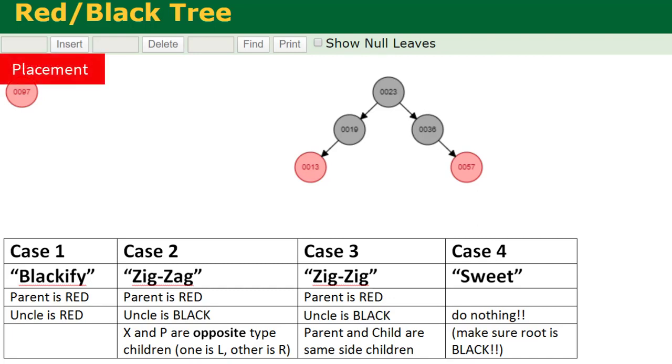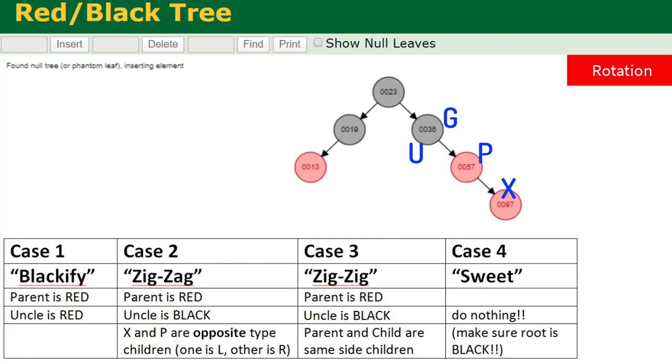Next number is 97. Place it - greater than 23, greater than 36, greater than 57. Notice we got two reds in a row, so we're moving on to our case and label phase. That is going to be case number three since the parent is red and the uncle is black.